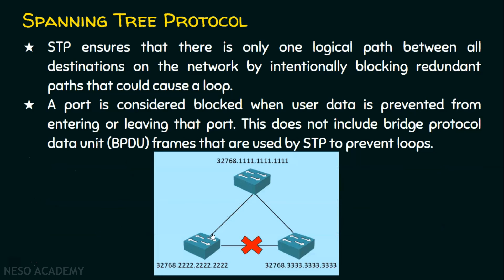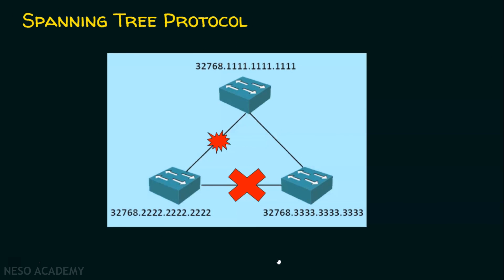When a physical path is needed to compensate for a network cable or switch failure, STP recalculates the paths and unblocks the necessary ports to allow redundant paths to become active. If there is a problem with the existing link, STP immediately recalculates the port cost and makes the redundant link available. The network will not be disrupted because of link failures, because STP saves us from broadcast storms.